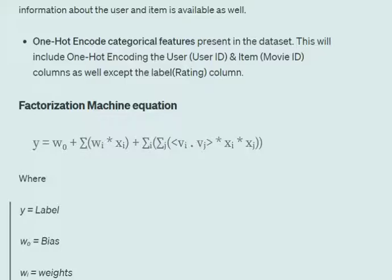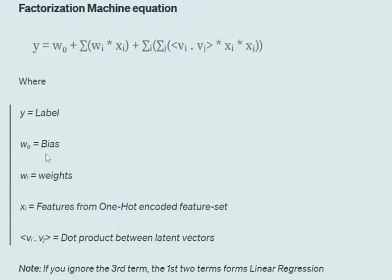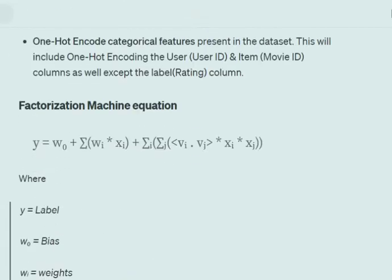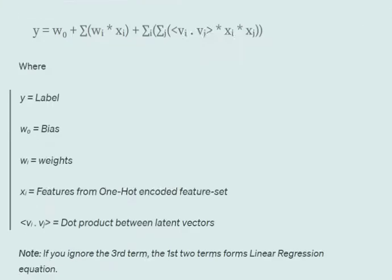Once we've one-hot encoded the categorical columns, we use the following equation: y = w0 + Σ(wi · xi) + Σi Σj (vi · vj) · xi · xj. Here, y is the label, w0 is the bias, wi are the weights, and xi are the features from the one-hot encoded feature set — not the original training features but the expanded one-hot encoded columns. vi · vj is the dot product between latent vectors. If you remove the third term, the first two terms represent the standard linear regression equation.